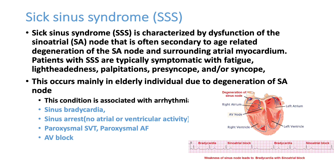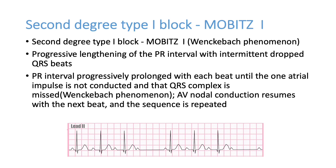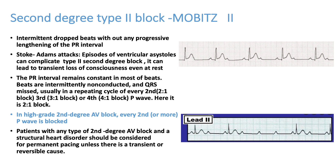Second degree AV block: prolonged PR interval is first degree AV block. If one QRS complex is dropped, it is second degree AV block. Mobitz Type 1 (Wenckebach) shows progressive prolongation of the PR interval — the first PR interval is short, the second longer, the third even longer, and then after a P wave there is no QRS complex (dropped beat). Mobitz Type 1 may not always cause significant bradycardia.